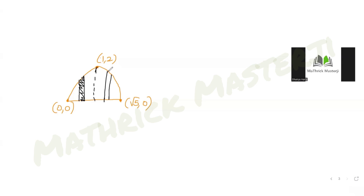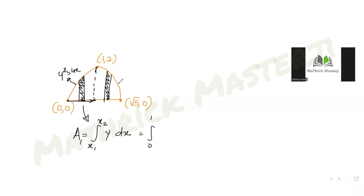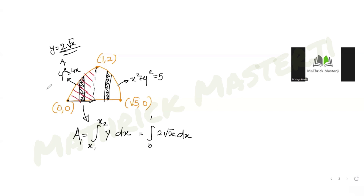Taking vertical strips, the areas are expressed as ∫y dx. For the first part — under the parabola from x = 0 to x = 1 — we have y² = 4x, so y = 2√x. This gives the first integral: ∫₀¹ 2√x dx.